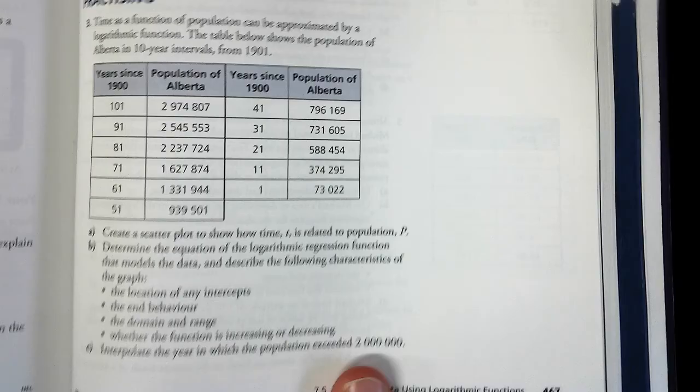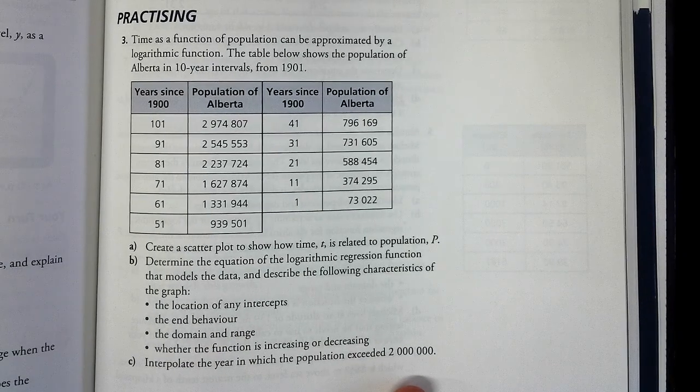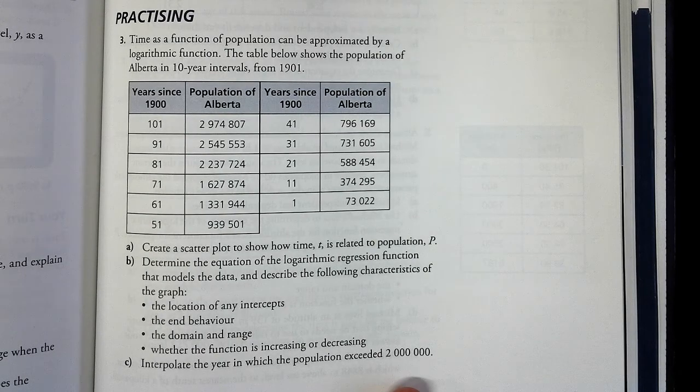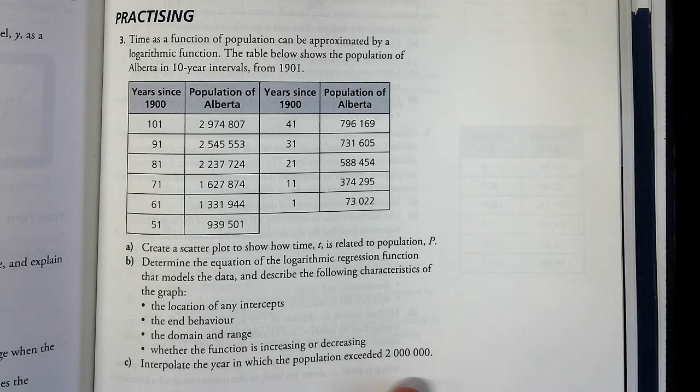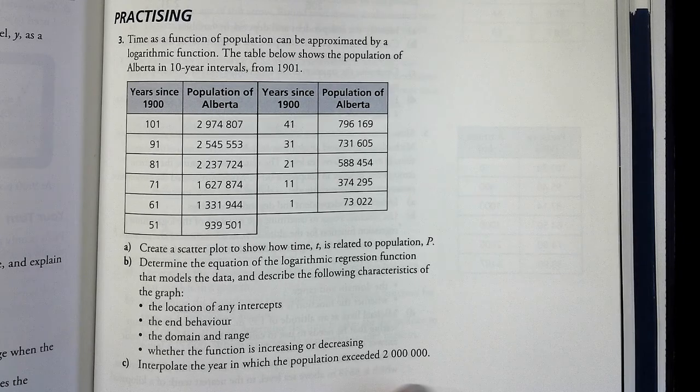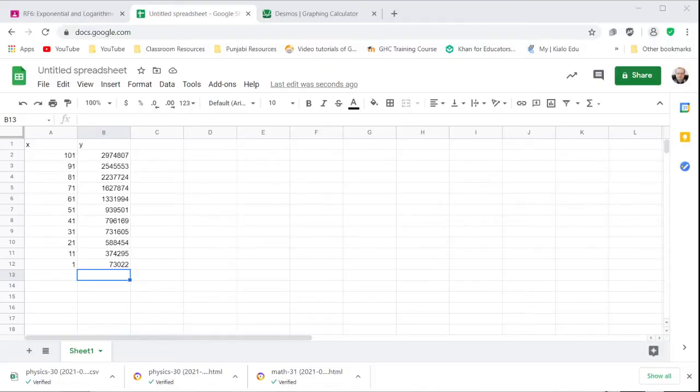For question 3, it's the same idea. But this time we are dealing with years since 1900 and the population of Alberta. So it asks us to create a scatter plot and find logarithmic regression, as well as interpolating the year in which the population exceeded 2 million. Again, interpolate rather than extrapolate is put data in the middle. So again, a quick pause while I enter this data. So we can see that the data has now been entered. So we can go back to that spreadsheet.